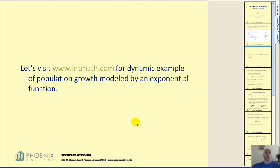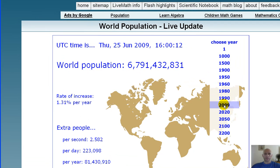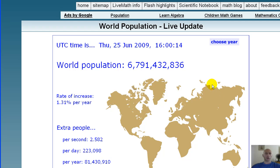I'd like to take a look at the website intmath.com for a dynamic example of exponential population growth. Let's take a look at today. According to this model, the world population is approaching 6.8 billion. On the lower left, we can see the rate of increase is approximately 1.31% per year.